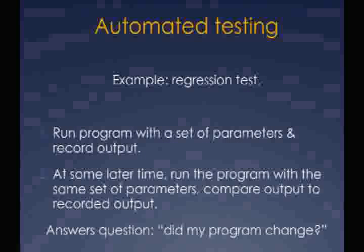Every couple of days or every couple of minutes, you do the same thing with the latest version of the source code. If your input is the same and your output changes, you go figure out why. This answers the question: did my program change? This is different from asking if your program is correct — but either your program was correct to begin with or it's correct now; you can't have it both ways. So if it changes unintentionally, you should probably figure out why. There's an obvious synergy with version control here.